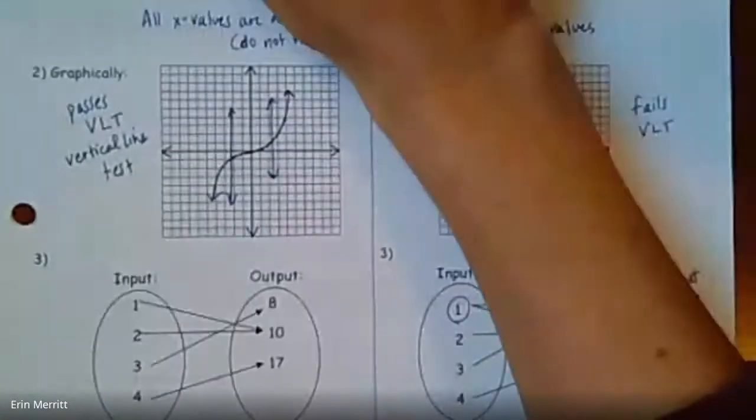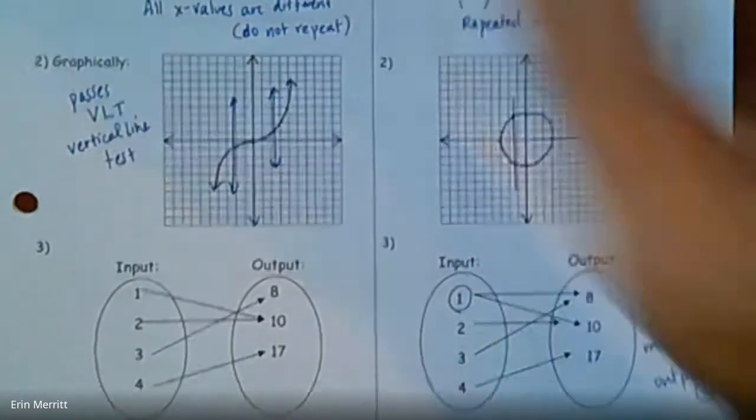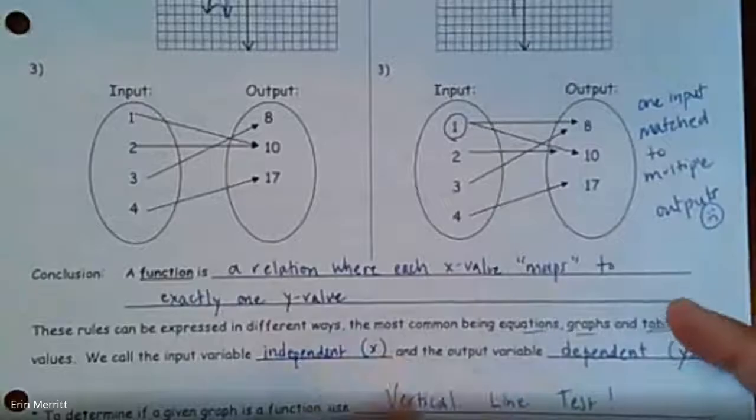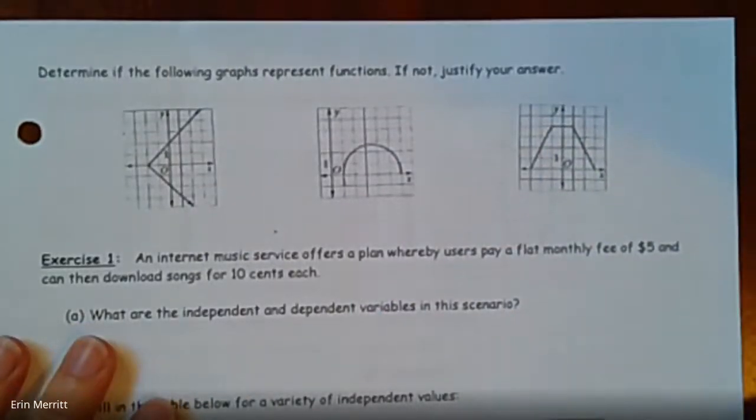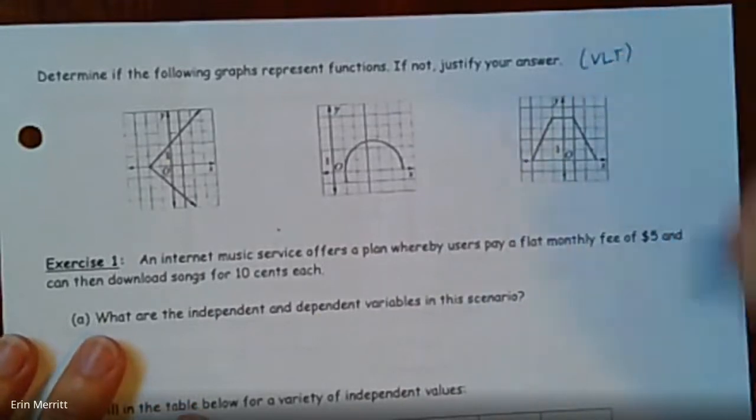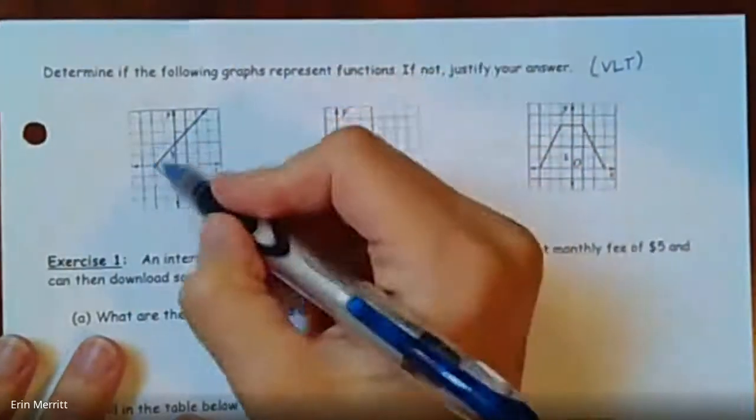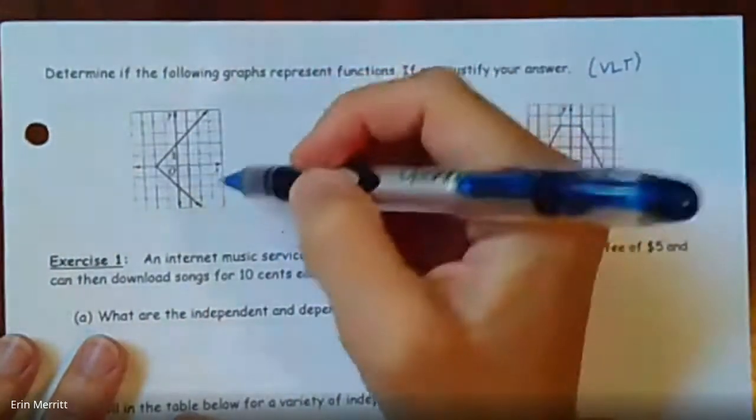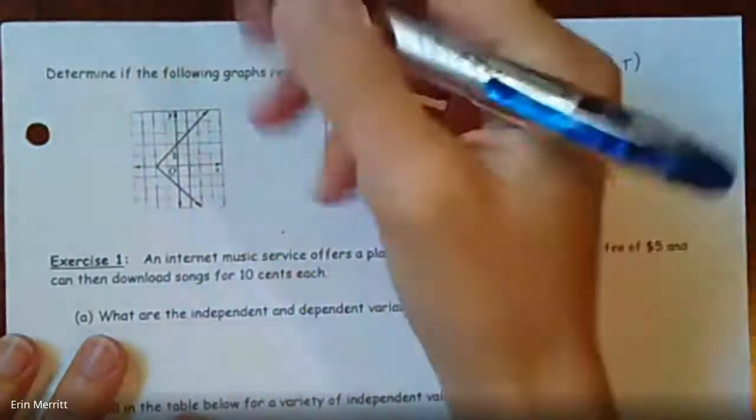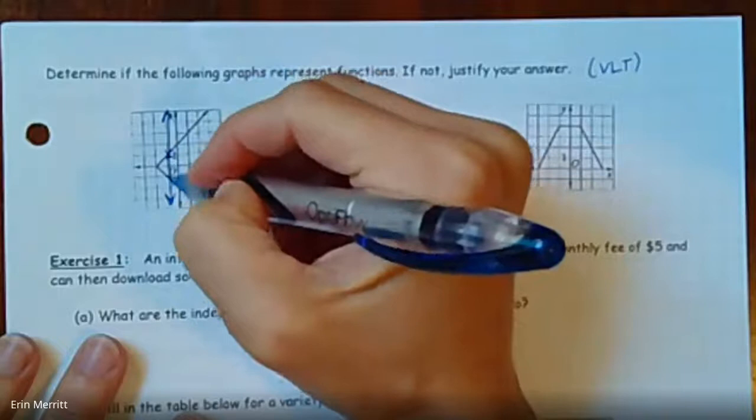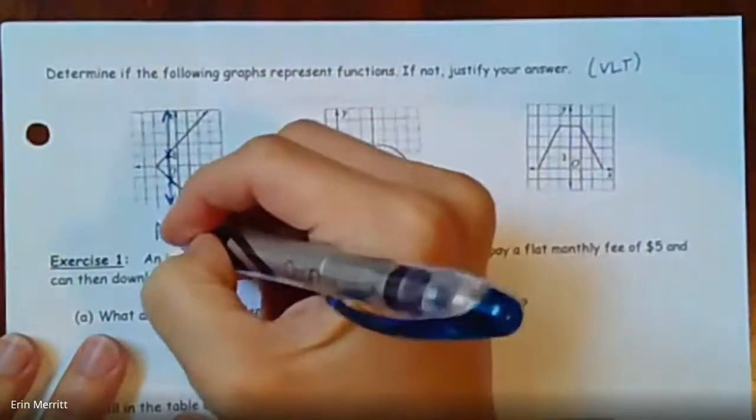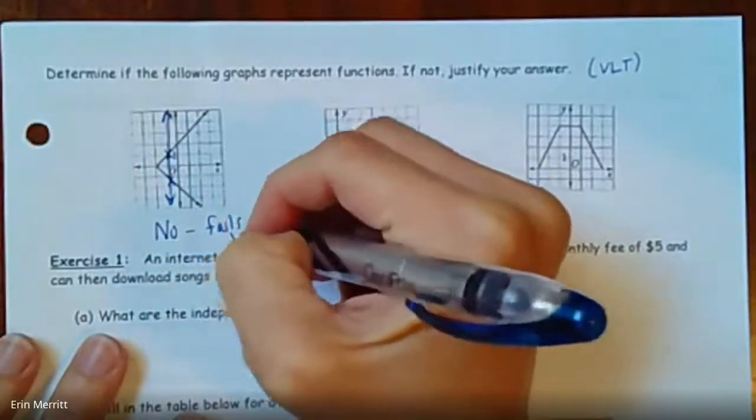Let's go ahead and switch on over to the next page. It's saying determine if the following graphs represent functions. If not, you should be able to justify. So here, what we're using is that vertical line test. So you kind of have this sideways absolute value going on here. But if I draw a vertical line, it hits in two spots. So is this a function? I would say no, because it fails the vertical line test.